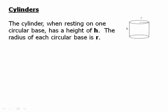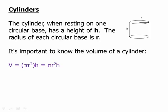So first of all, let's talk about cylinders. The cylinder, when resting on one circular base, has a height of h. The radius of each circular base is r. So it's two congruent circles connected by this curved thing. You could say that a cylinder in some ways is a circular version of a prism. It's important to know the volume of a cylinder, pi r squared h. The test could expect you to know that.